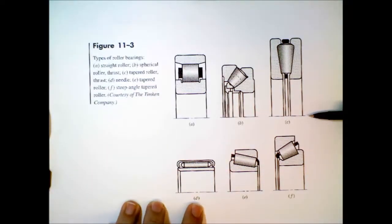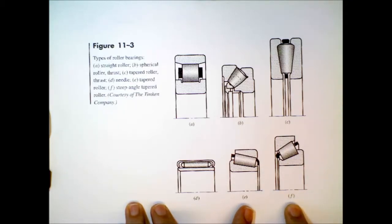Here we have a needle bearing that can handle only radial forces, and then these bearings E and F, these tapered rollers, these can handle both radial and thrust forces.